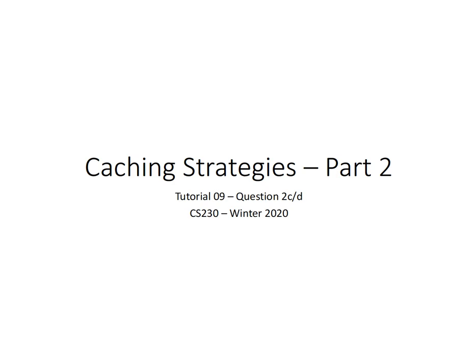This is a continuation of an example from Tutorial 9, Question 2. This is Parts C and D, where we take a look at associative caches — in particular, a two-way set associative cache. I'm going to do a bit of a review first, and then we'll get into the results of an associative cache.